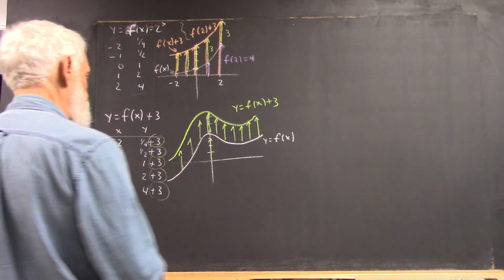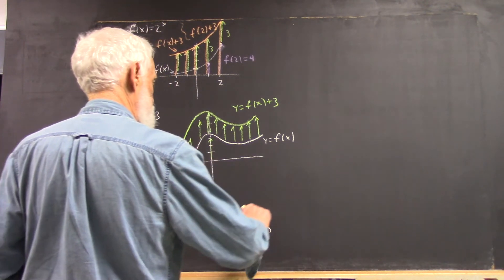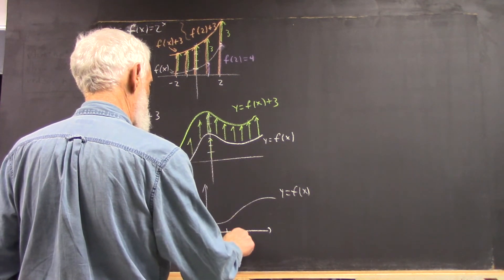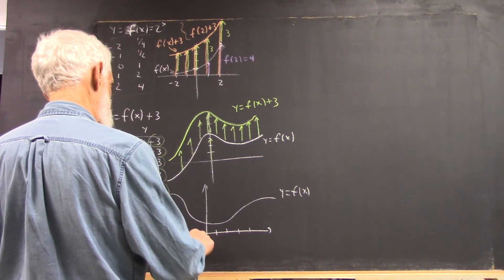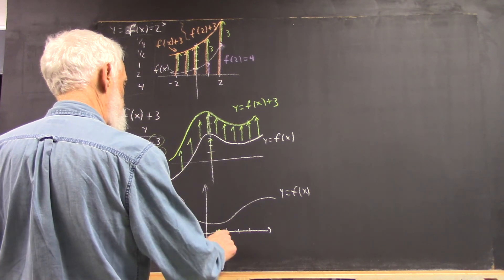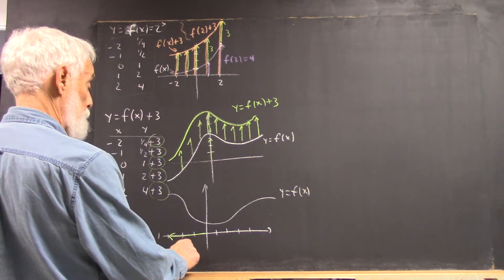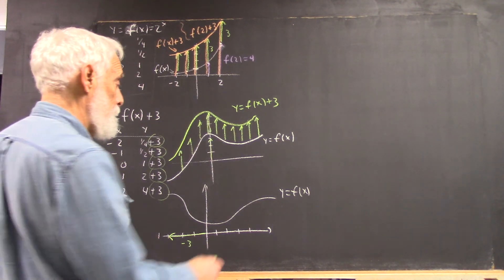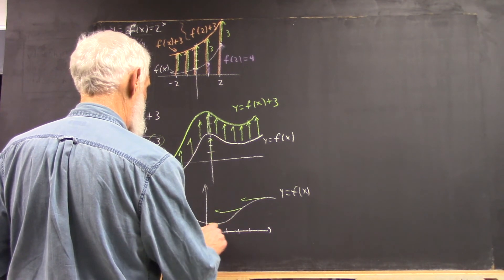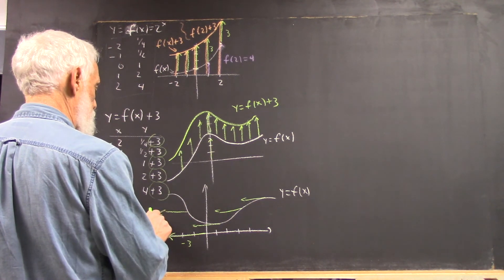So, if we add another graph, just to contrast this, if this is y equals f of x, we have a scale here. Then, if we make an arrow representing negative 3, we could take every point of this graph and move it over to the left 3 units.